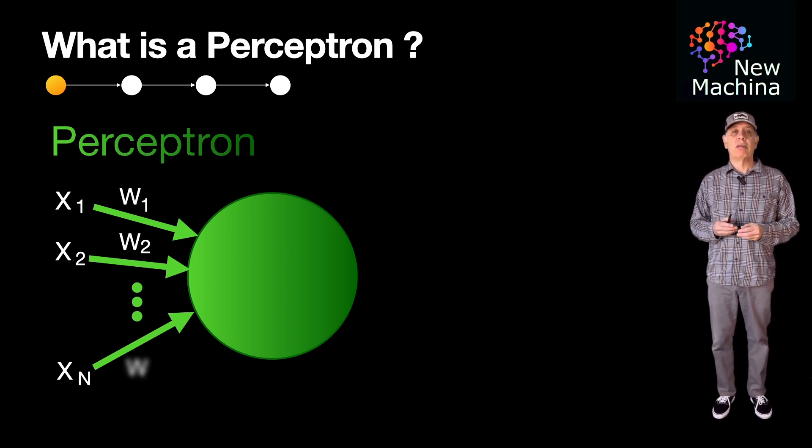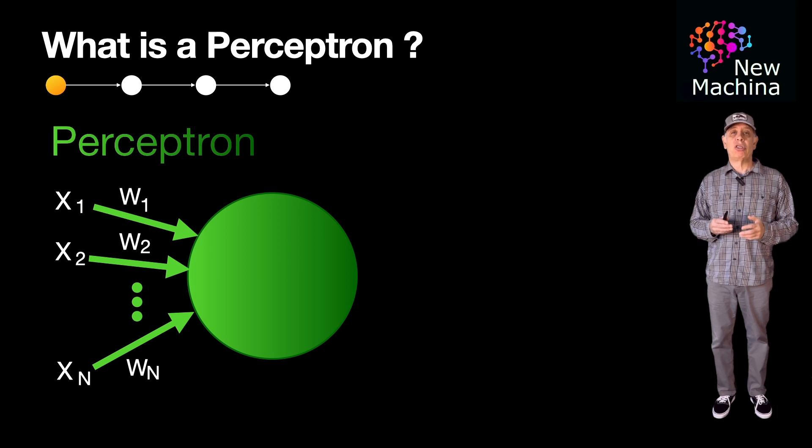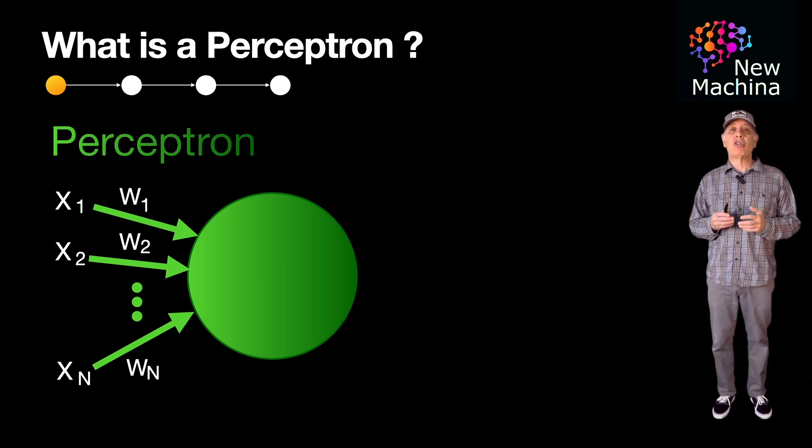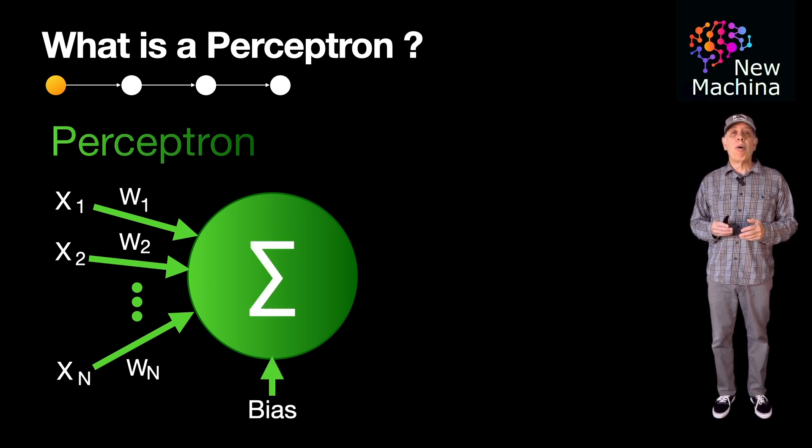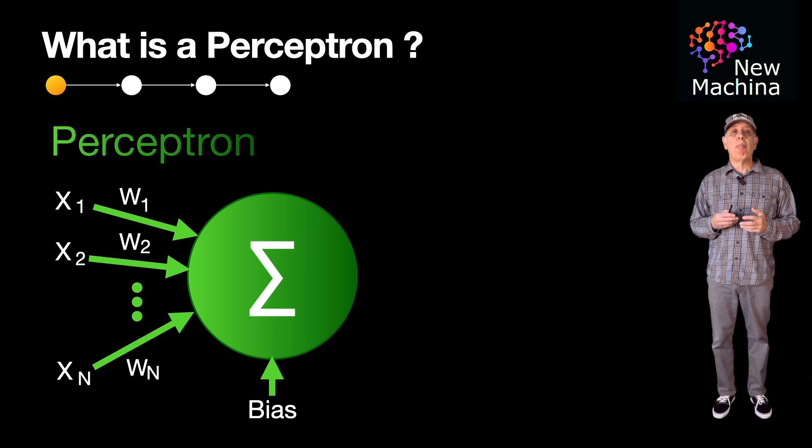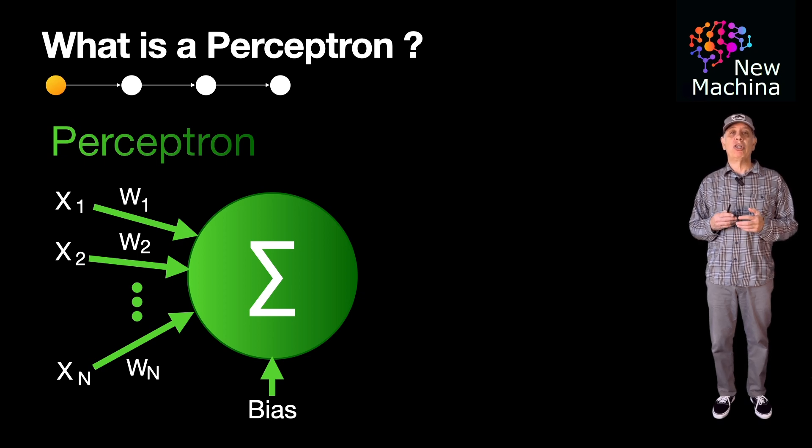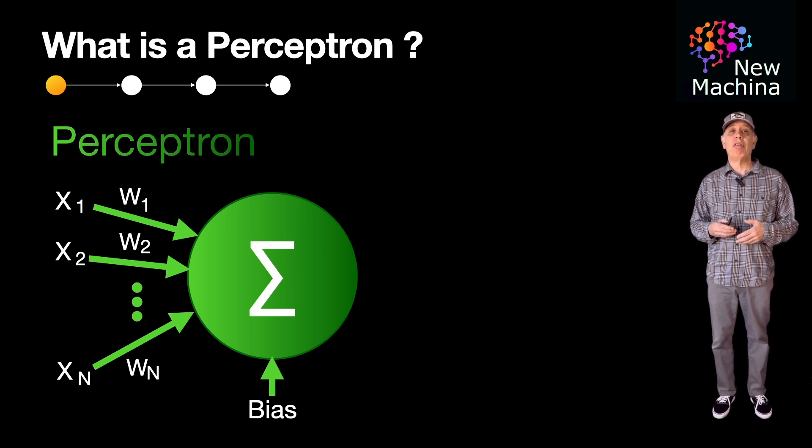The second is weights. Each input is associated with a weight which determines its importance in the decision-making process. The third component is bias. A bias term is added to adjust the output independently of the input, improving the flexibility of the model.